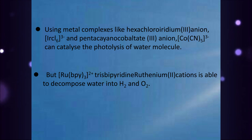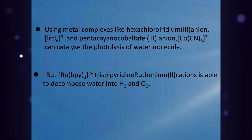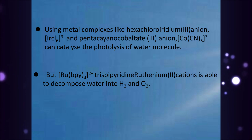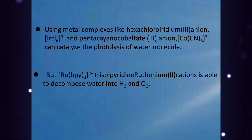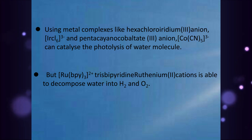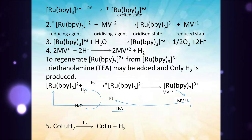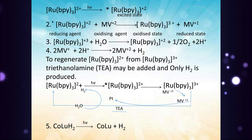To suppress the back reaction, methyl viologen is used, which acts as an oxidizing agent and quenching agent for the tris-bipyridine-ruthenium(II) cation complex. The product tris-bipyridine-ruthenium(III) cation is a good oxidizing agent.